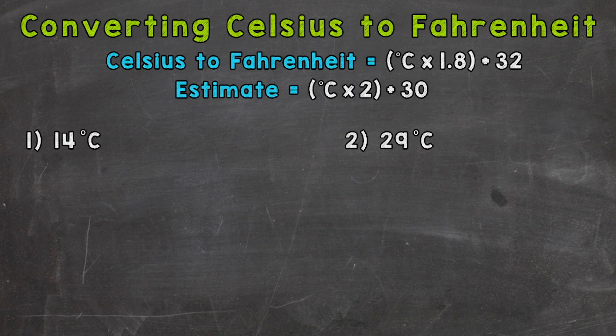Now the formula that we're going to use is at the top of the screen. We're going to take the degrees Celsius that we're given, multiply it by 1.8, and then add 32. I also have an estimation formula that I'll go through. The estimation formula can be used to find an approximate or close conversion using mental math.